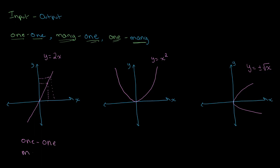So therefore the ratio of input to output values is one-to-one, making this one-one mapping. Now let's look at the graph of y = x². For this graph, we similarly see that for each individual input or x value, we receive only one output or y value. However, for each individual output value, we receive two input values.